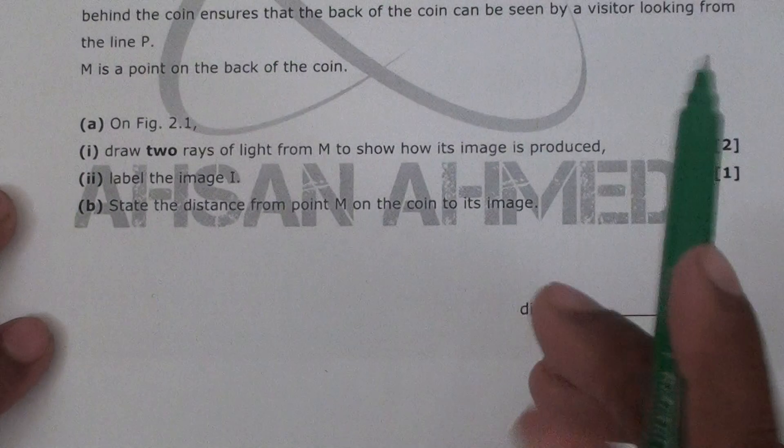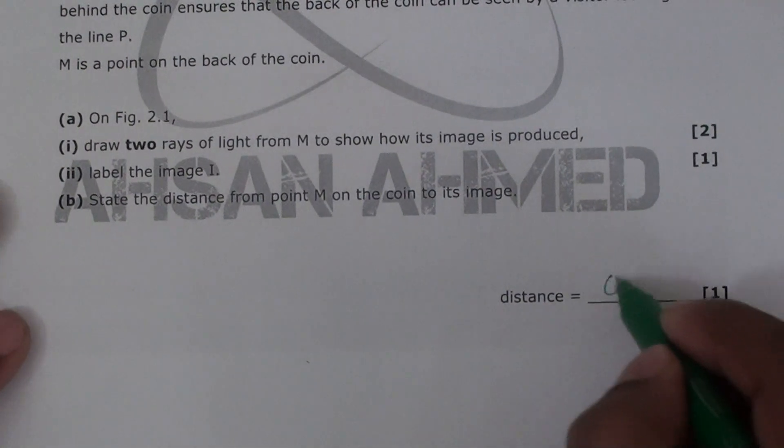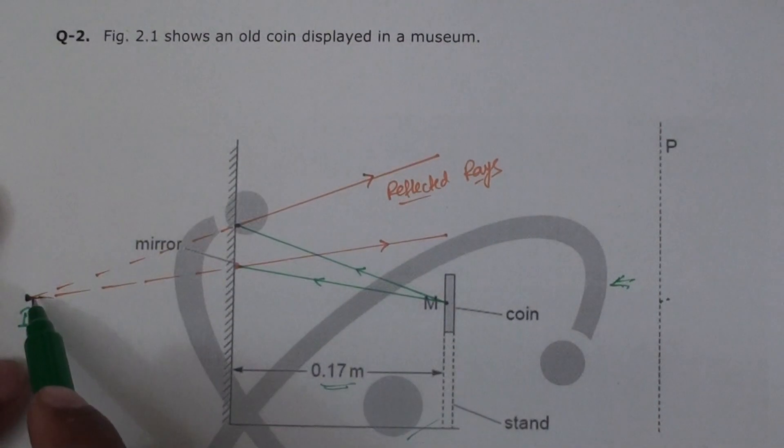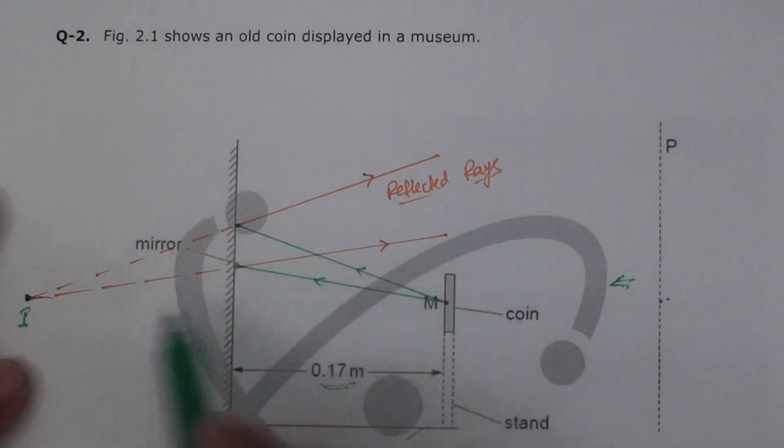So we have to add up to 0.34 meters. The distance here should be 0.34 meters, from M to the image, from here till here.